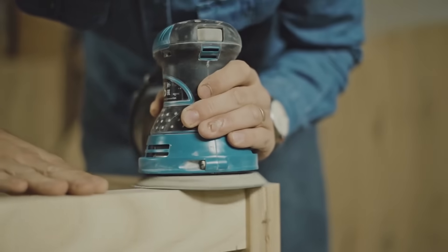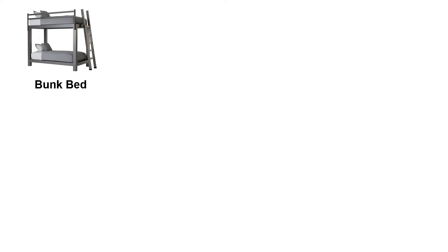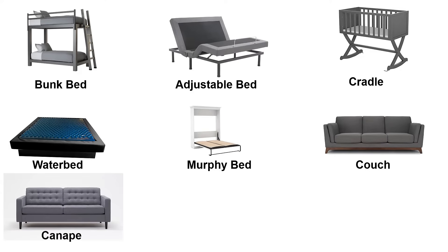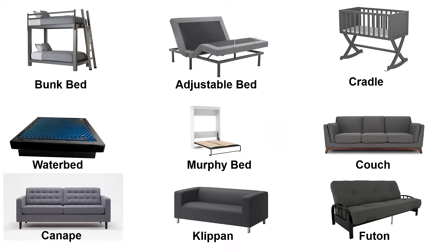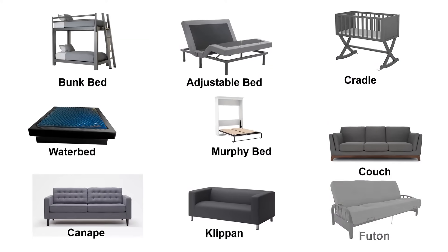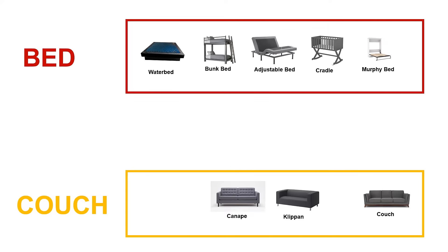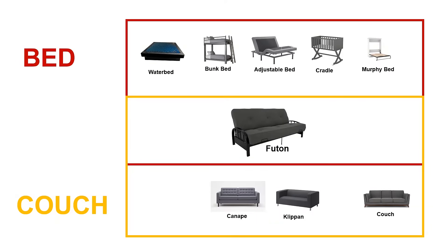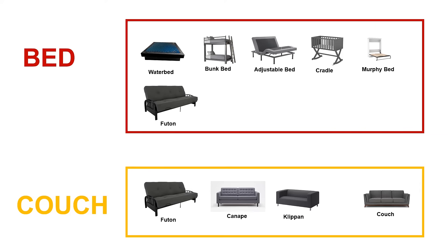Let's take an example. Let's say we need to organize a list of products a company manufactures — things like bunk beds, adjustable beds, cradles, water beds, Murphy beds, couches, canopy, futon, etc. Some of these products can be categorized as beds and some as couches. And some could go under either, such as the futon — I actually have one right behind me, that yellow one. So the futon could be categorized under either category, and most often it is assigned to both.